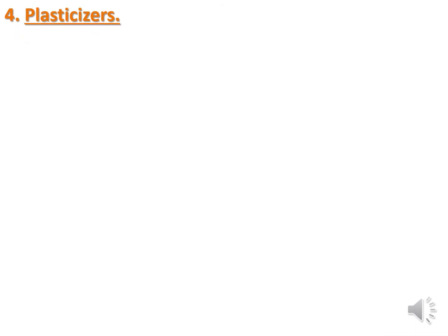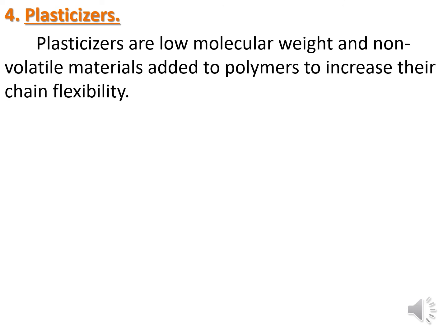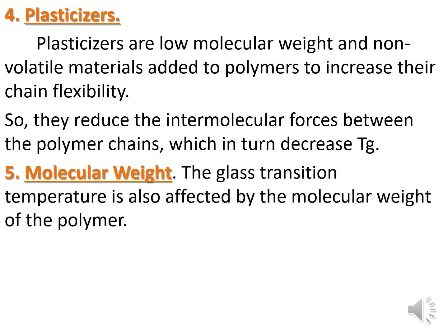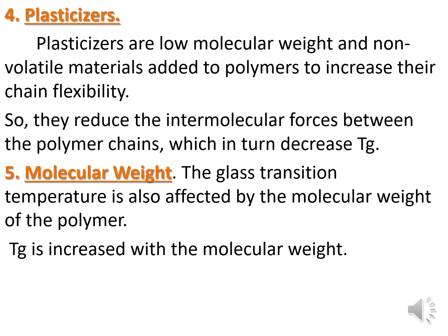Fourth, plasticizers: plasticizers are low molecular weight, non-volatile materials added to polymers to increase their chain flexibility. They reduce the intermolecular forces between polymer chains, which in turn decreases the glass transition temperature (Tg). Fifth, molecular weight: Tg is also affected by the molecular weight of the polymer — Tg increases with increasing molecular weight.